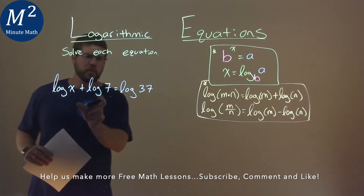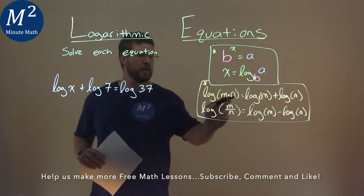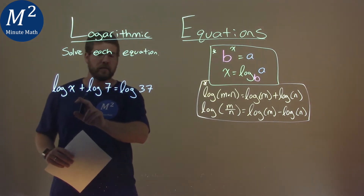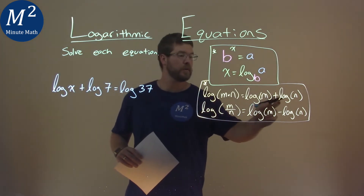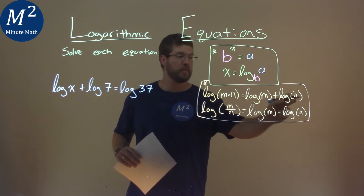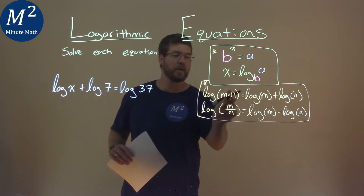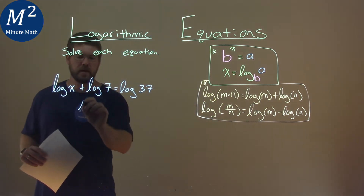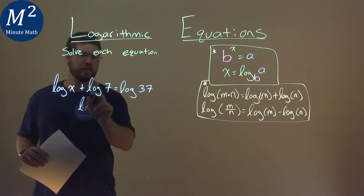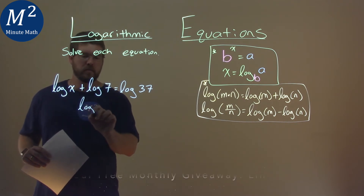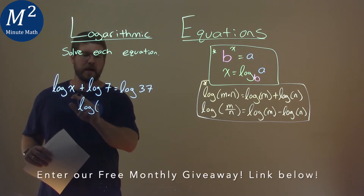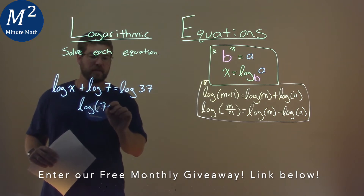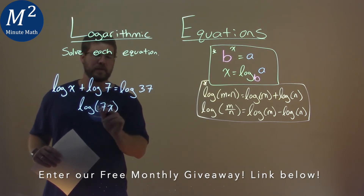Our rules say that if we have log of x plus log of 7 — that is, log of m plus log of n — we can combine them with multiplication inside of the logarithm, because they also have the same base. So log of x plus log of 7, adding them, gives us log of 7x.